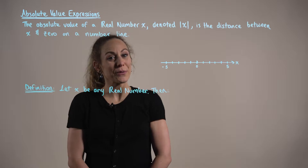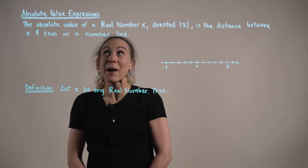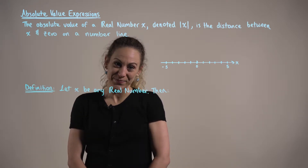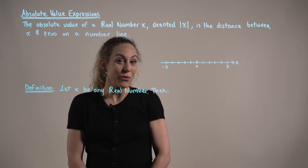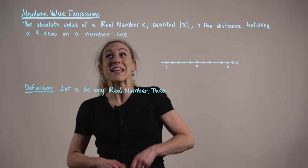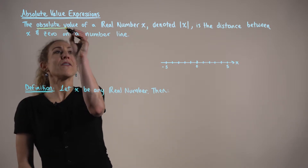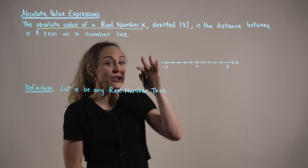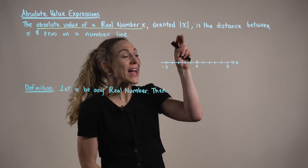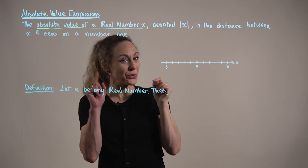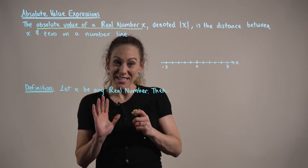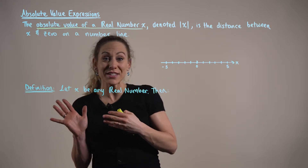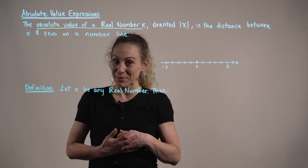Here we are reviewing absolute value expressions. Recall that the absolute value of a real number x, denoted by x in between two straight bars, is the distance between x and zero on the number line.